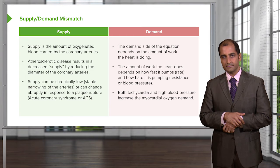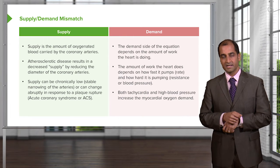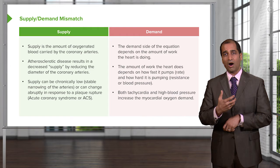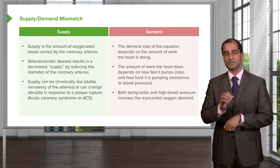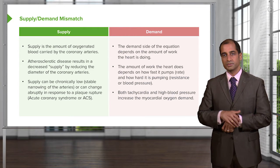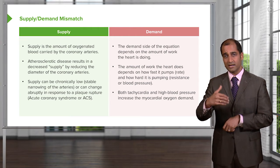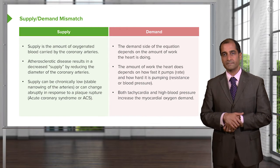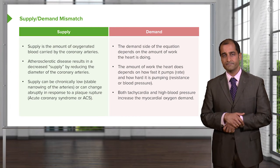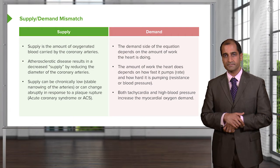Tachycardia and high blood pressure increase the myocardial oxygen demand. What might you want to do in this patient when the demand is too much? You do everything in your power to slow it down. How might you decrease your heart rate? With a beta blocker. What might you want to do in terms of blood pressure? Try to decrease it.